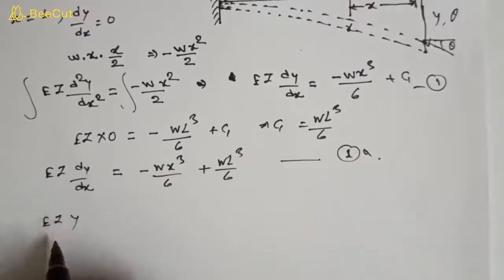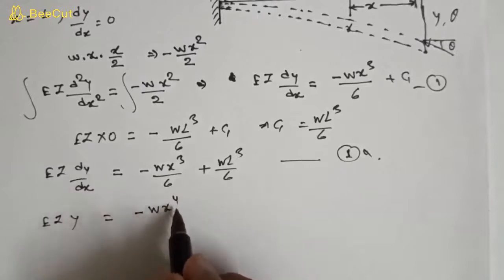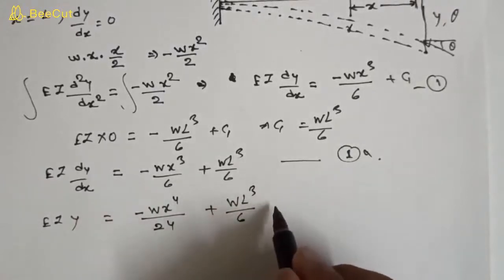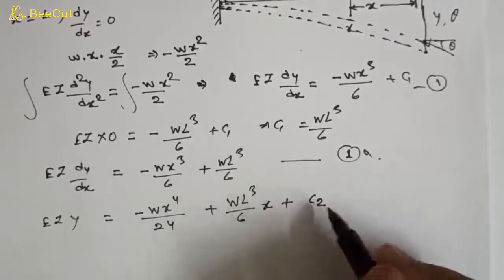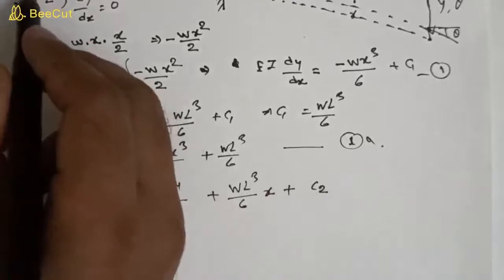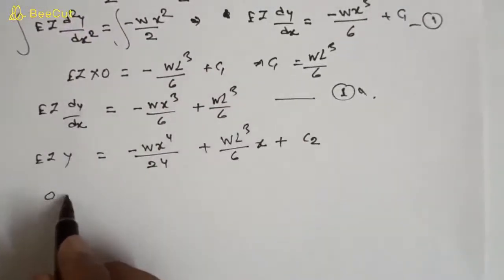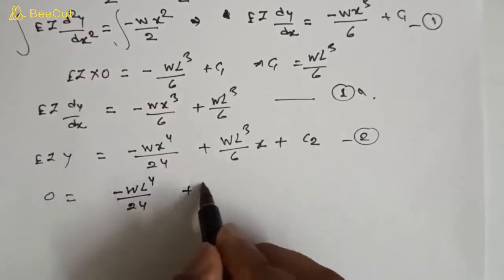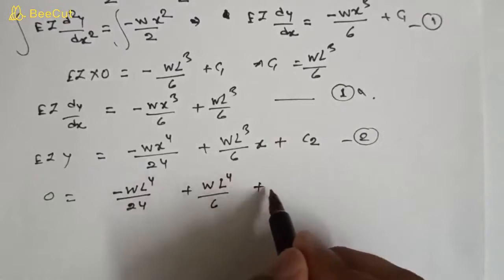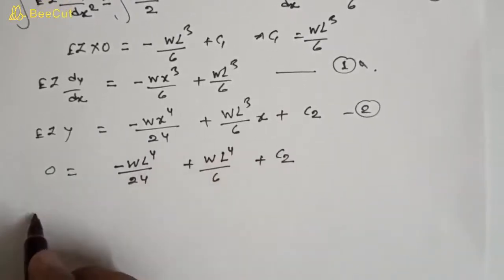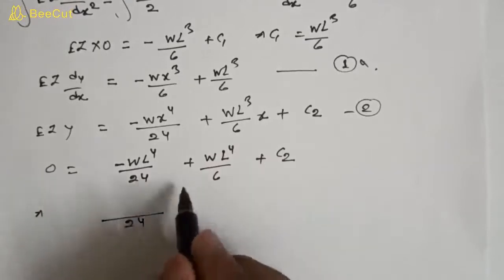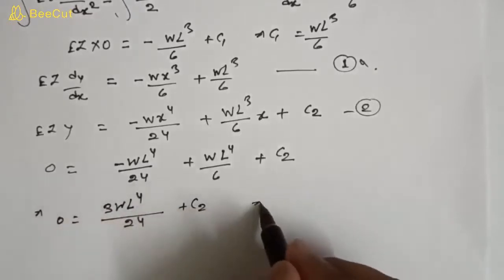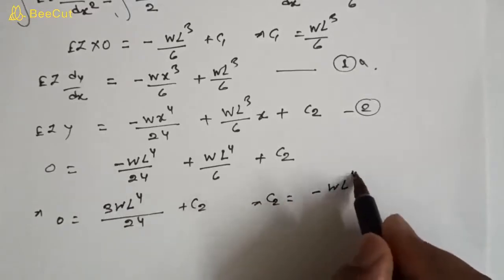Integrating again, we get EI·y = −wx⁴/24 + (wl³/6)x + C₂. Applying the boundary condition x = l, y = 0: 0 = −wl⁴/24 + wl⁴/6 + C₂, which gives 0 = 3wl⁴/24 + C₂. Therefore C₂ = −wl⁴/8.